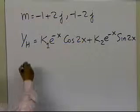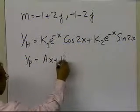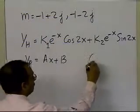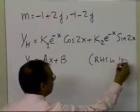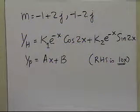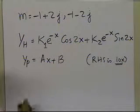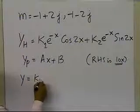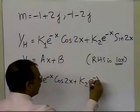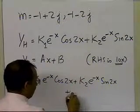The particular part of the solution will be ax plus b. The reason it's ax plus b is because the right-hand side forcing function is 10x, so you choose all the modes of the right-hand side as well as its derivatives — in this case that gives ax plus b. So the full solution will be k1·e^(−x)·cos(2x) plus k2·e^(−x)·sin(2x) plus ax plus b.